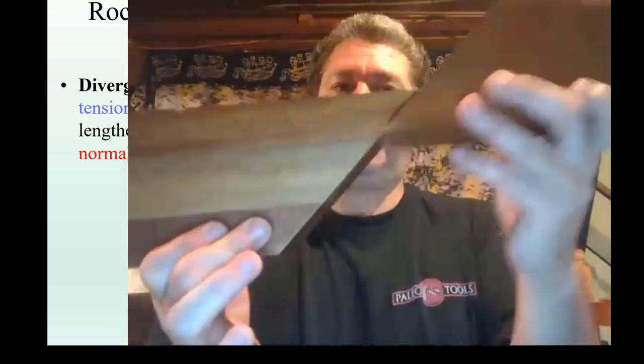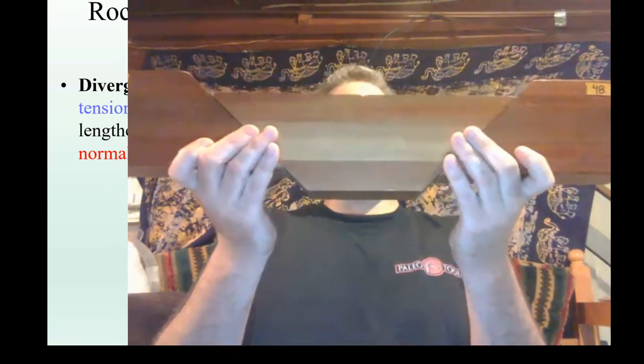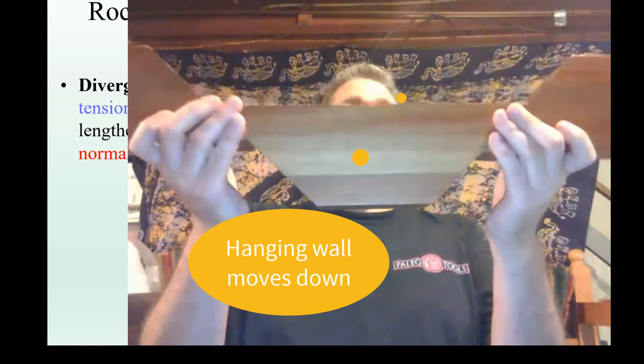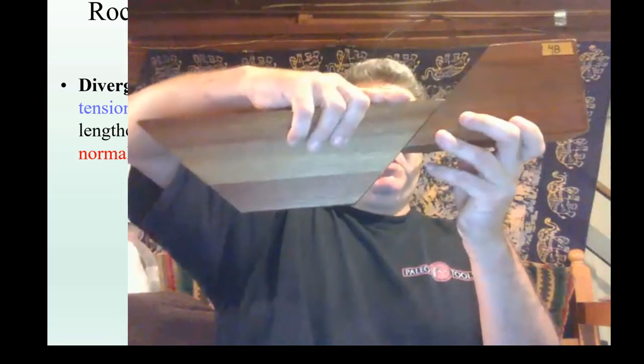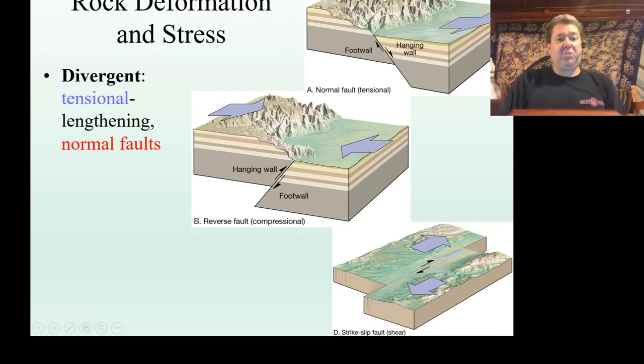The first type is a normal fault — found at divergent margins with tensional stress. The space issue here is too much space; to accommodate, we're going to have to shorten and thin. The hanging wall moves down relative to the foot wall — it drops to help accommodate that lengthening. As you pull the plates apart, it drops to accommodate that lengthening. You can trace this in the rock layers — a layer on the hanging wall has dropped down relative to the foot wall. That is a normal fault.